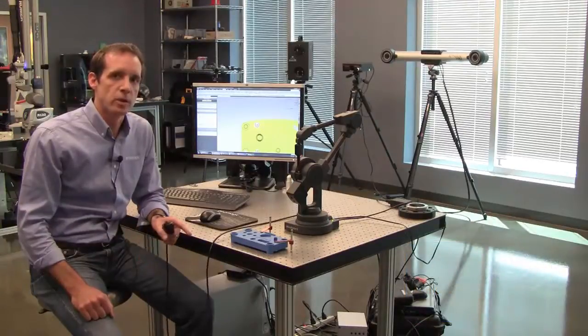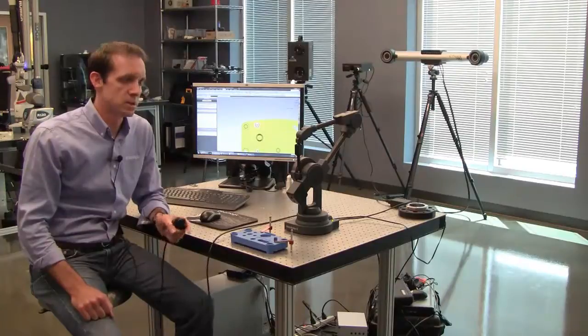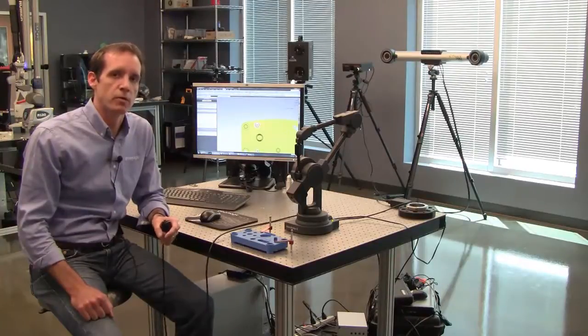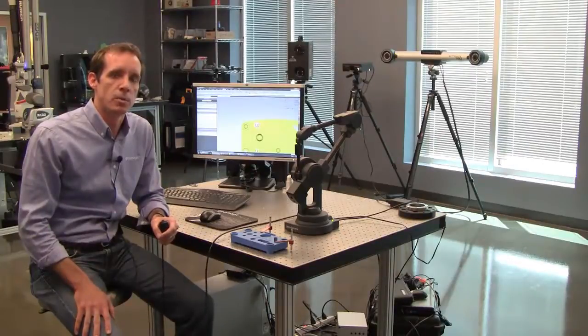Today we've got a plugin for the Microscribe series of digitizers. The Microscribe is an interesting little device. It's actually a portable six-axis articulated arm. It's very good for reverse engineering by collecting points, by scribing across a part, but we've actually got a plugin to use with our metrology applications, Qualify and Qualify Probe.